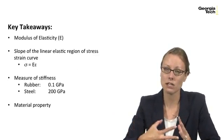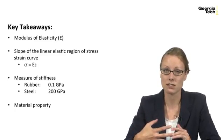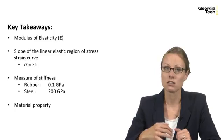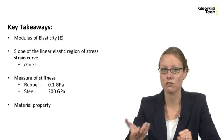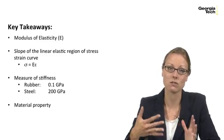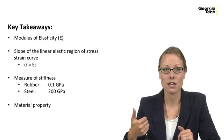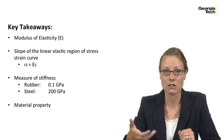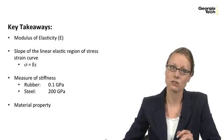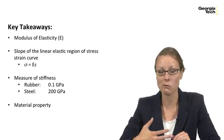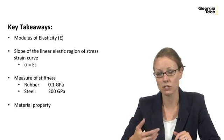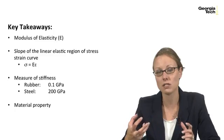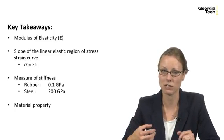So some key takeaways from this lecture. The modulus of elasticity in this class will be denoted with a capital E. The slope of the linear elastic region of the stress strain curve is the modulus of elasticity, so stress σ = Eε. It's a measure of stiffness. The modulus of elasticity can be thought of as a measure of stiffness. For rubber, which is very easy to deform, it's about 0.1 gigapascals. But steel, much harder to deform, is 200 gigapascals for our steels. This is a material property that's intrinsic to the material.